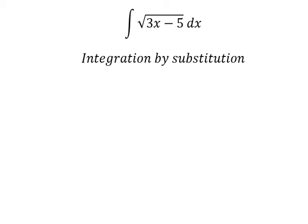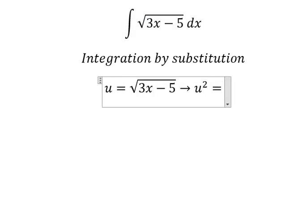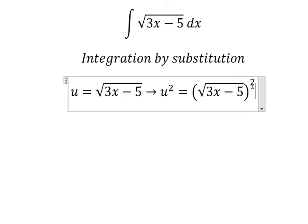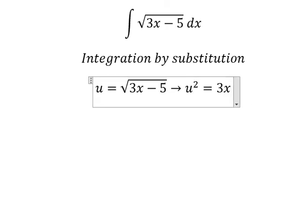I need to put u equals to this one. Now we put the square for both sides to cancel the square root, and we have u² = 3x - 5.